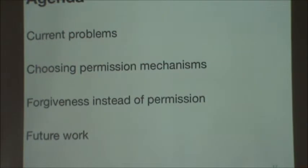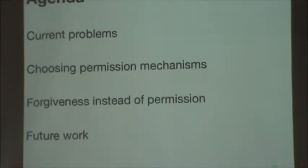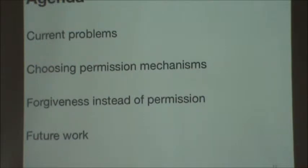So in this talk, I'm going to go into more detail about problems with the permission systems on mobile platforms, and also about how one of the big difficulties in the area is choosing the right mechanism for granting permissions, and how poor decisions in that area create a lot of usability problems. And then finally I'll talk about how in some cases simply asking for permission might be misguided, and instead we should be retroactively creating audit mechanisms so users can see what happened in the past. And then there's some future work.